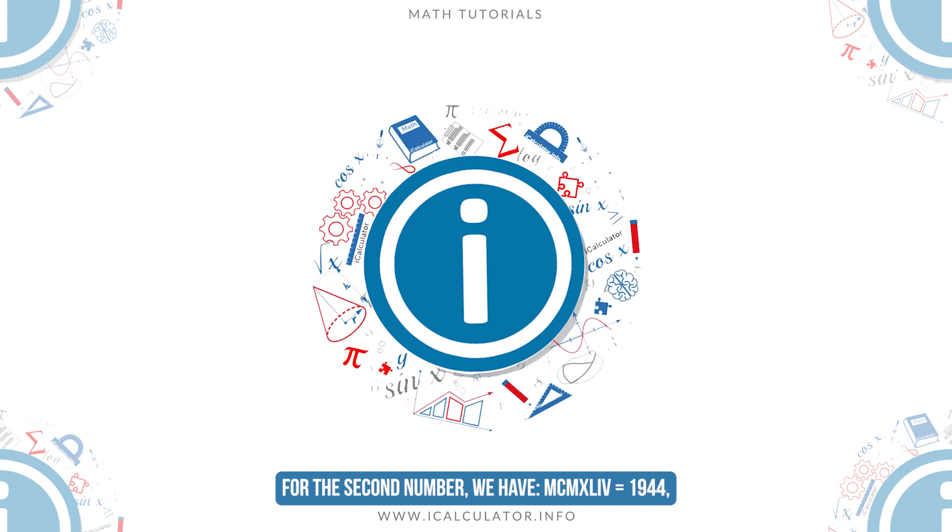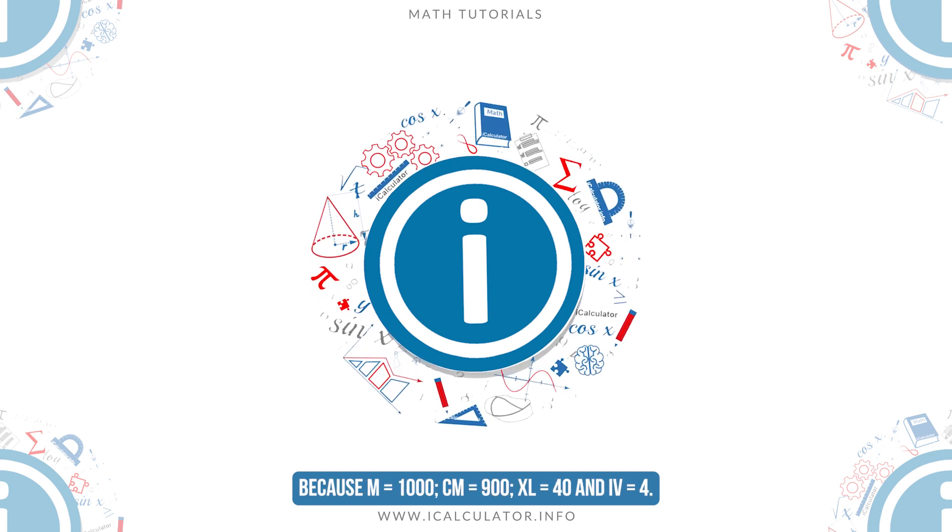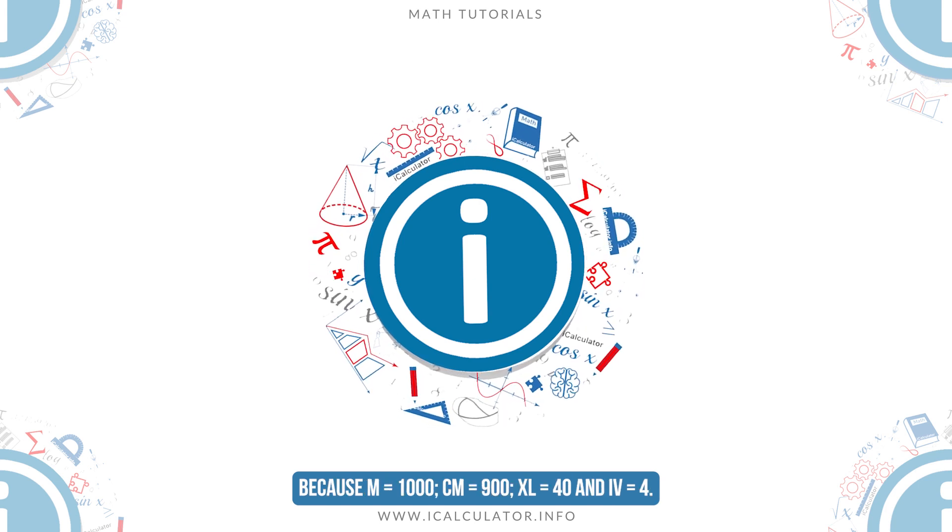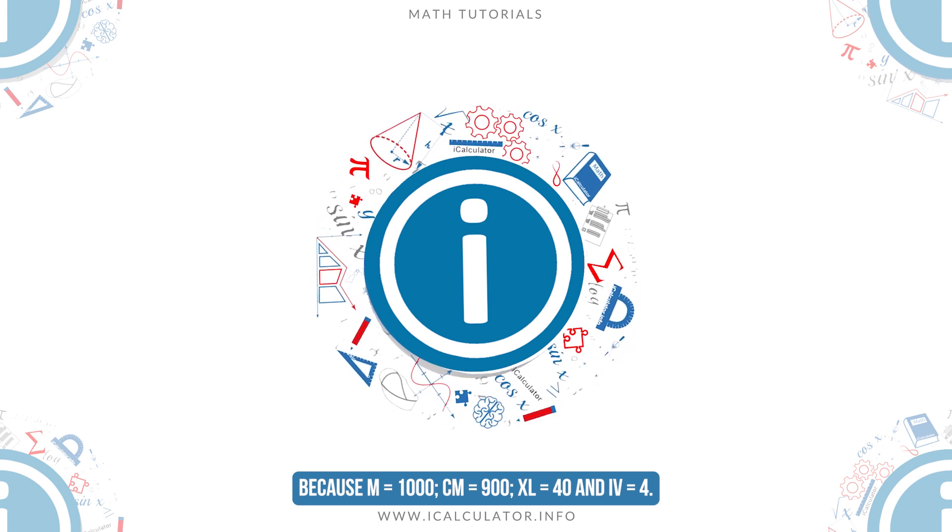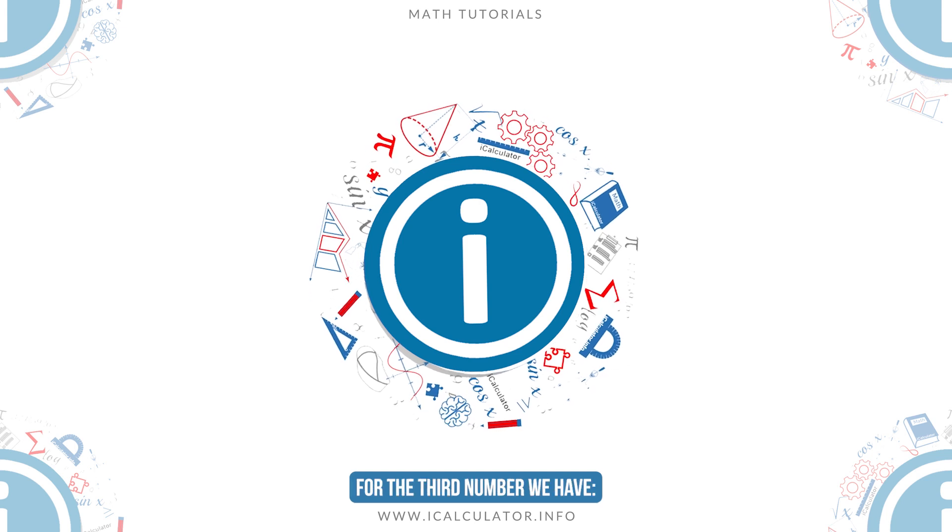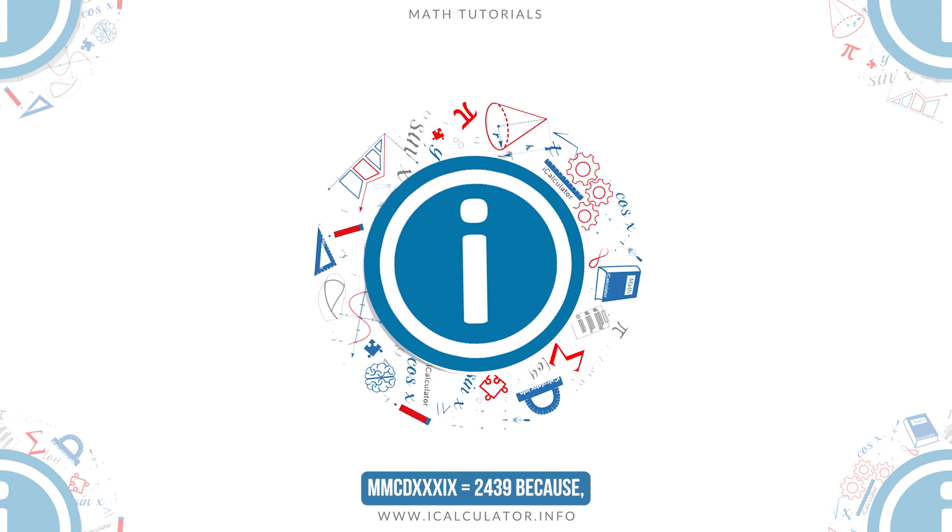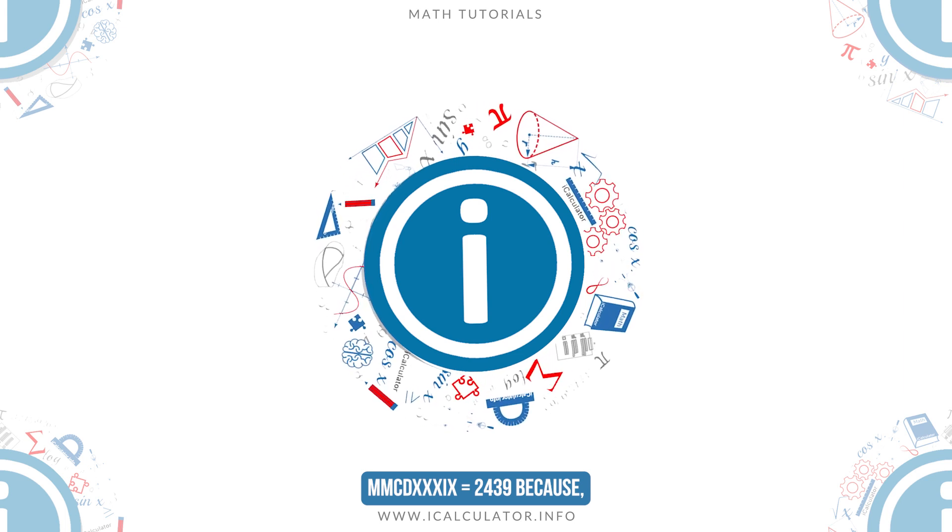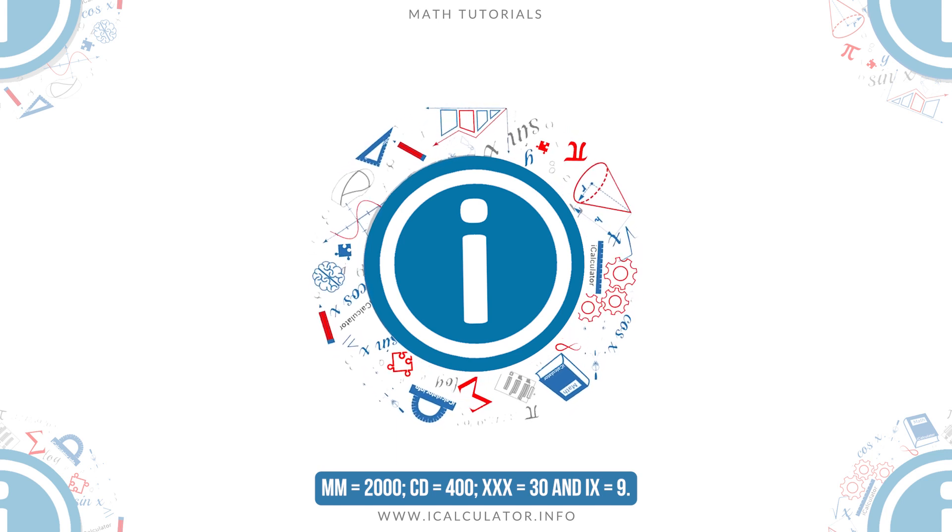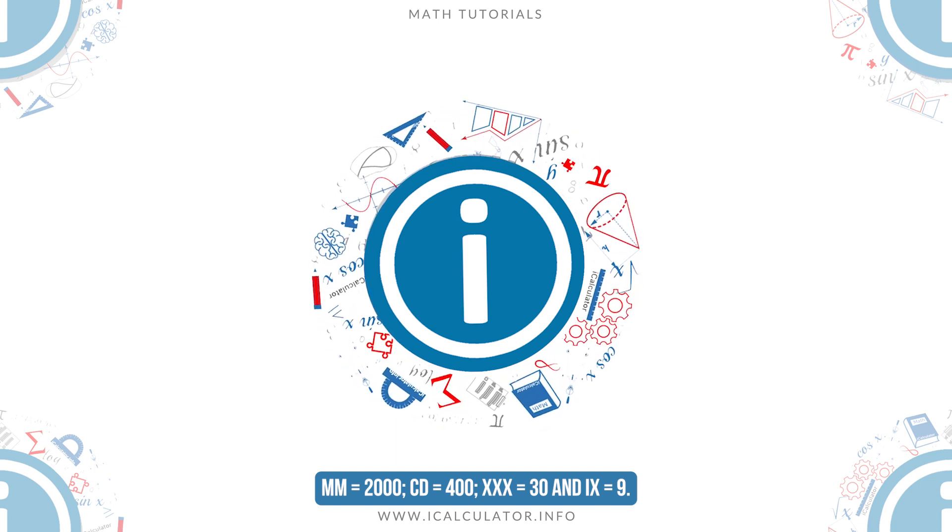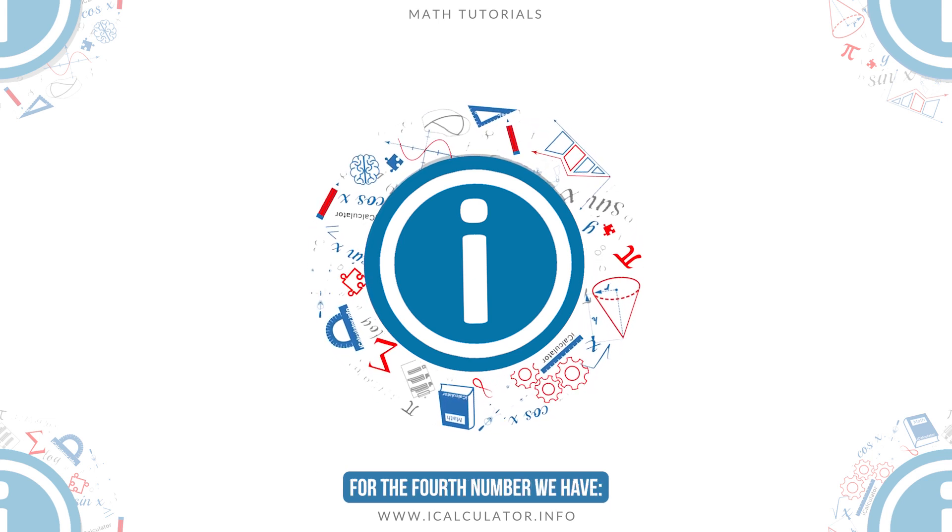Because M equals 1,000, CM equals 900, XL equals 40, and IV equals 4. For the third number we have MMCDXXXIX equals 2,439, because MM equals 2,000, CD equals 400, XXX equals 30, and IX equals 9.